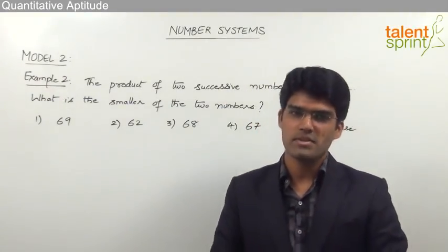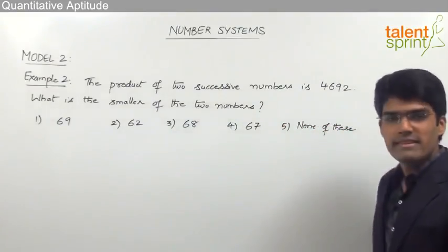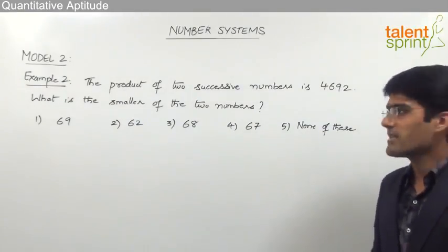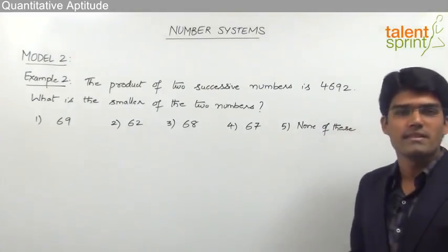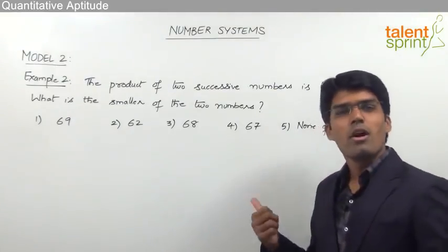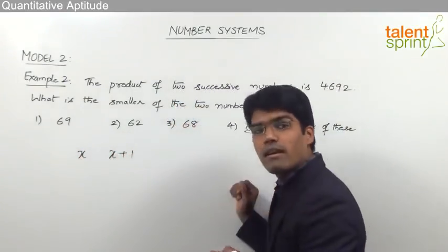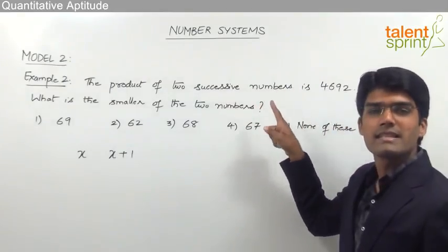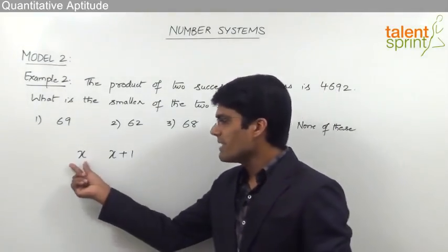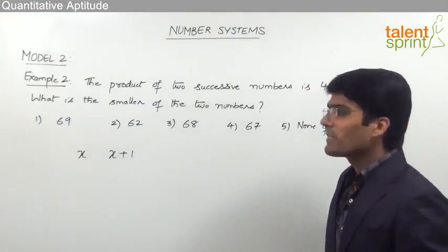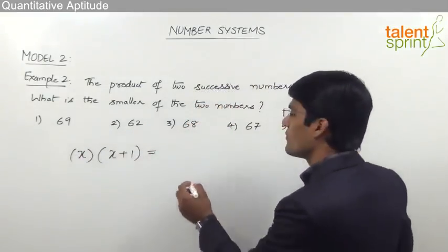Let us take the second example based on consecutive numbers. The product of two successive numbers is 4692. What is the smaller of the two numbers? The product of two consecutive numbers is 4692, and we need the smaller number. By the concept, the two successive numbers should be x and x+1 — not specified as even or odd, so these are successive natural numbers.